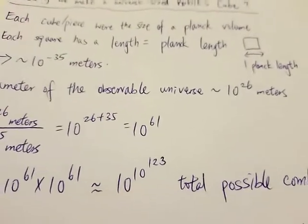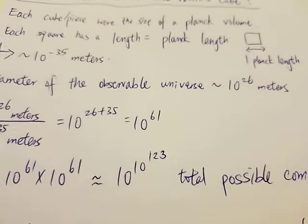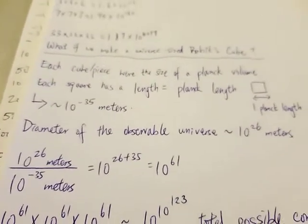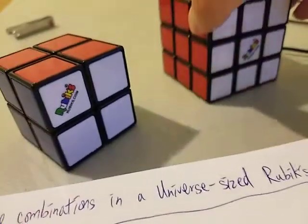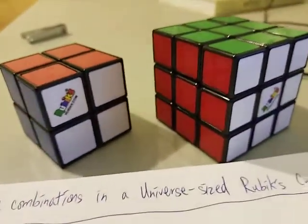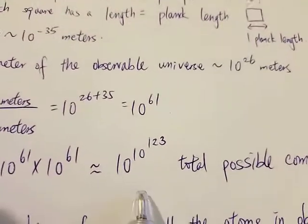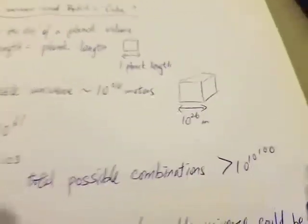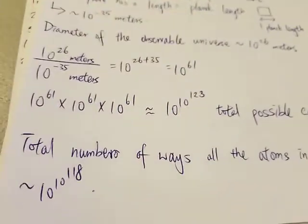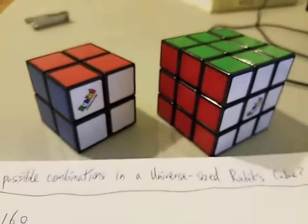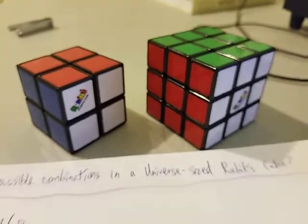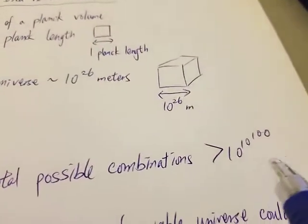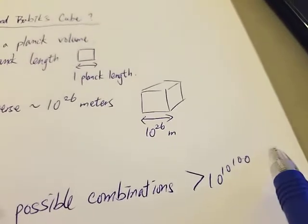If you want to get a number bigger than a Googleplex in the real world, one way is by Rubik's cube. If you can make a universe sized Rubik's cube, then yeah, the total possible combination will be bigger than a Googleplex. But that's pretty much it. Even something this crazy, you can just barely pass the Googleplex. You cannot go much higher than that.